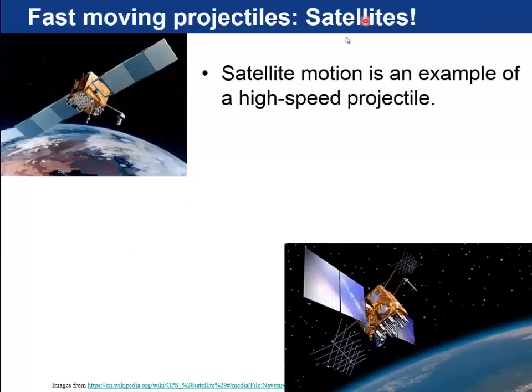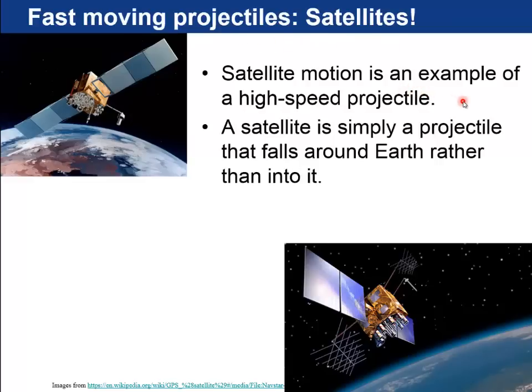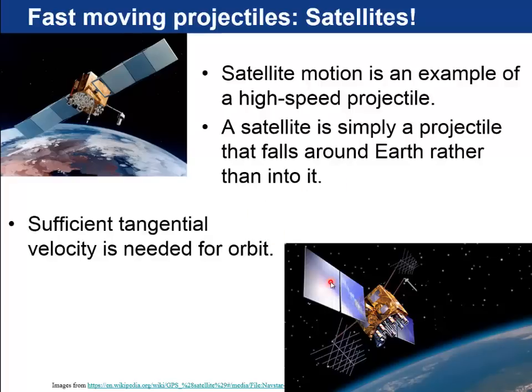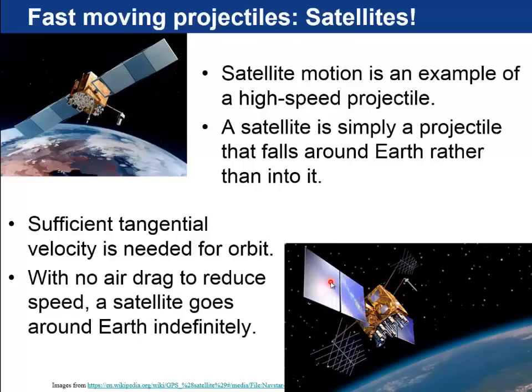Okay, so now we're on to section 8.3 on orbital motion. Fast-moving projectiles are satellites. So satellite motion is an example of a high-speed projectile. These GPS satellites or communication satellites orbiting the earth are simply projectiles that fall around the earth rather than down into it. You need sufficient tangential velocity, meaning tangent to the surface of the earth, in order to get into orbit, but if there's no air drag to reduce speed, a satellite without any engines on it will just go around earth indefinitely. That's how these things work.